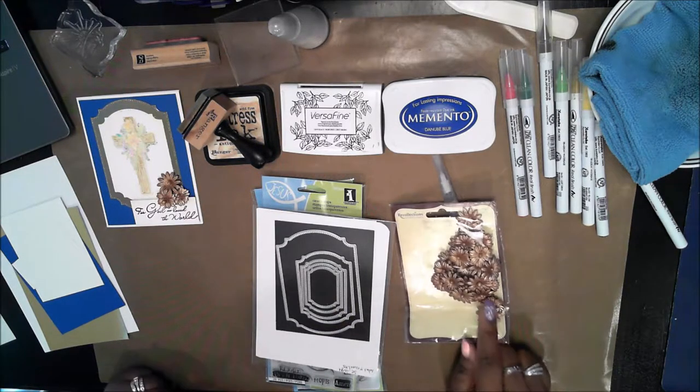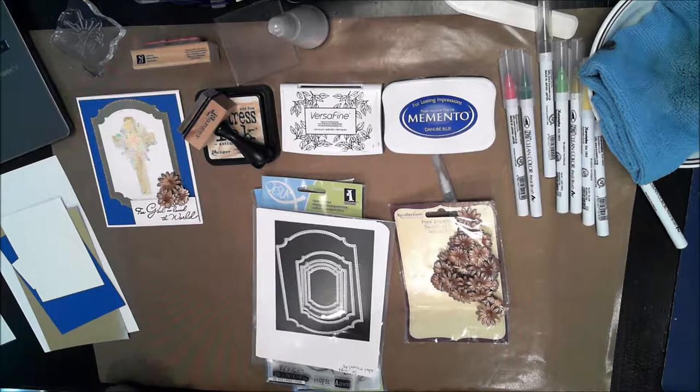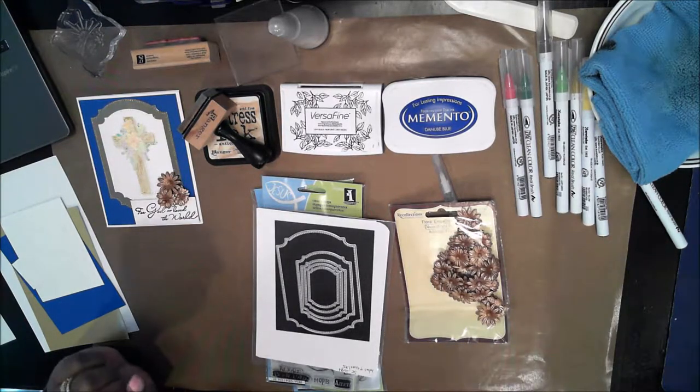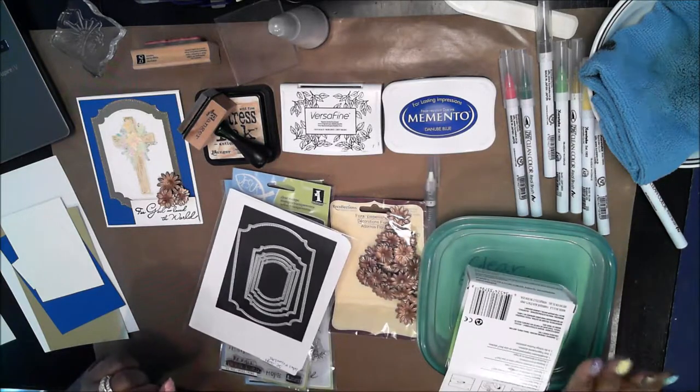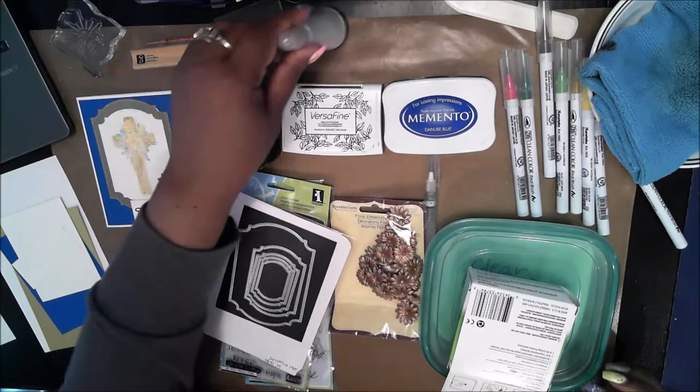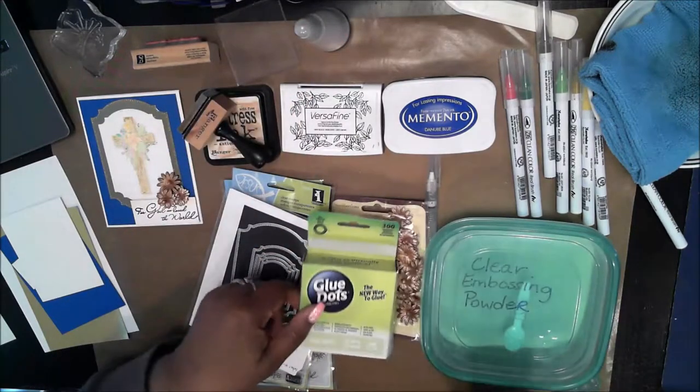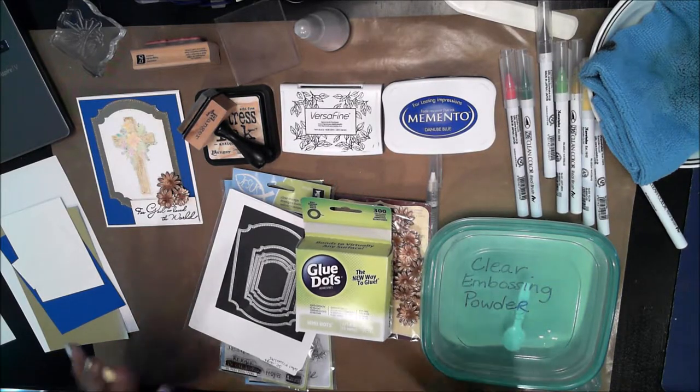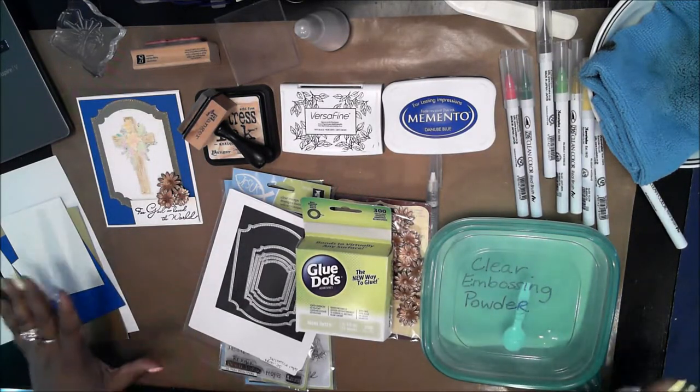I'm also using some gold flowers for embellishment and I will need to do some embossing so I'm using my clear embossing powder which means of course I will be using my embossing tool. I need glue dots to stick the flowers and foam tape.